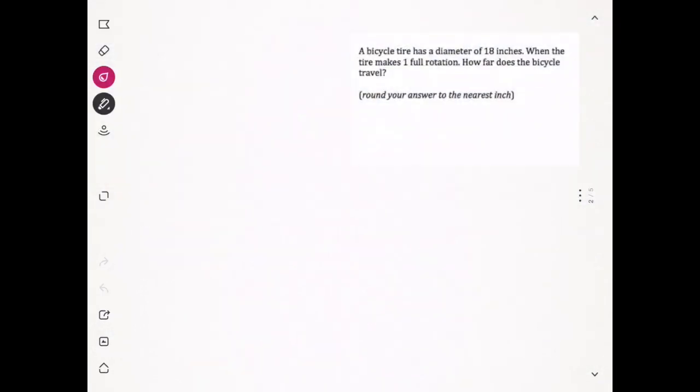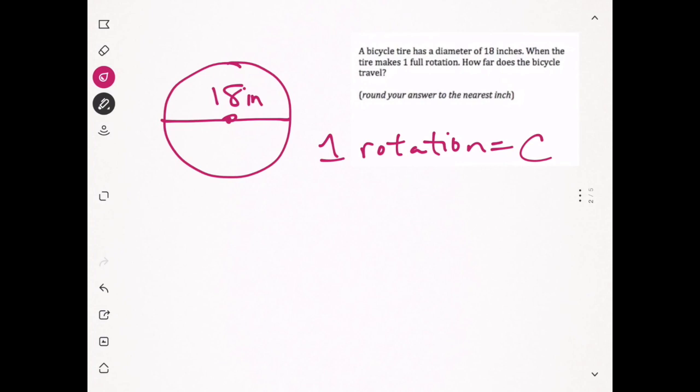Question number one: a bicycle tire has a diameter of 18 inches. When the tire makes one full rotation, how far does the bicycle travel? What we want to know is one rotation, and one rotation is equal to the circumference. Let's recall our formula: circumference equals pi times diameter. We know that the diameter is 18, and we're trying to find the circumference.